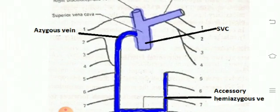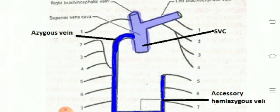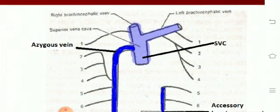On the left side, the second, third, and fourth join together to form the left superior intercostal vein, which drains into the left brachiocephalic vein. So that is the difference: right side drains into the azygos vein, left side drains into the left brachiocephalic vein.